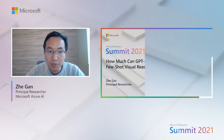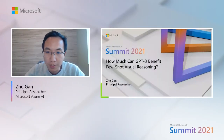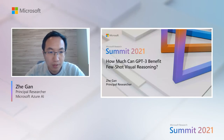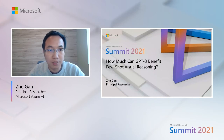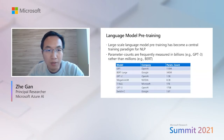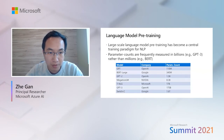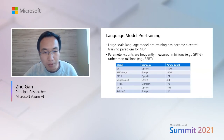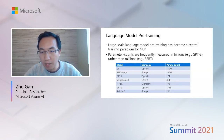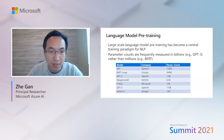Hi, everyone. My name is Zhe. I'm a principal researcher at Microsoft. Today, I'm very happy to introduce our recent work on how much GPT-3 can benefit few-shot visual reasoning. Large-scale language model pre-training has become a central training paradigm for NLP, with parameter counts frequently measured in billions rather than millions. For example, the OpenAI GPT-3 has 175 billion parameters.